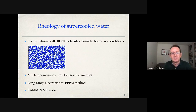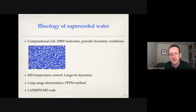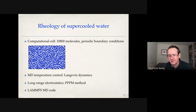The computational cell contains 10,800 molecules with periodic boundary conditions — so a molecule at one edge sees its neighbor through the periodic boundary wrapping in all three directions. We use molecular dynamics, integrating equations of motion with Langevin dynamics to control temperature. Since electrostatics are involved, we handle long-range interactions using the particle-particle particle-mesh (PPPM) method. All of this was implemented using the LAMMPS MD code, which is free and feature-rich.